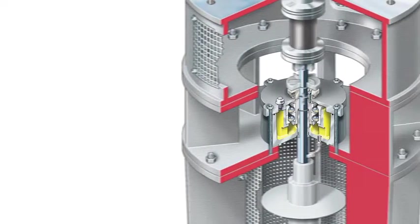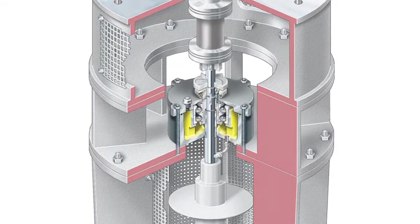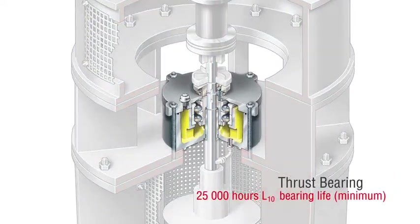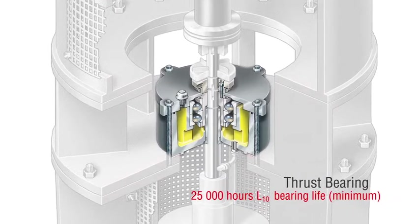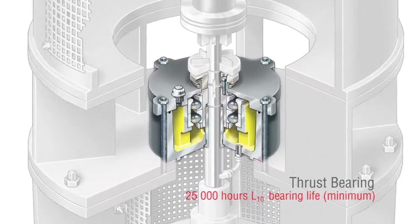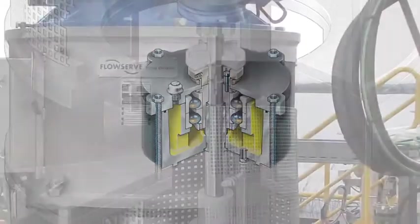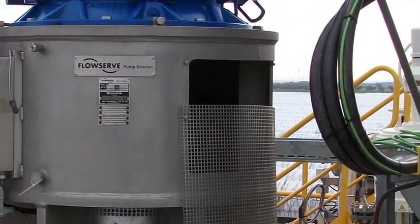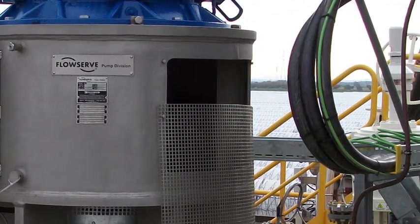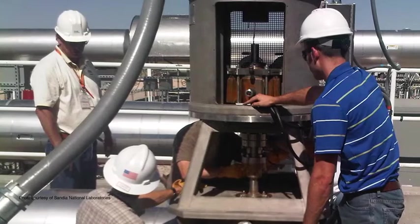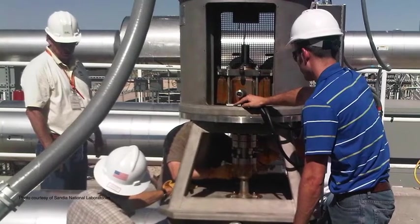The pump features a robust thrust bearing design to handle the pump's total hydraulic thrust and its assembled weight while delivering a minimum of 25,000 hours L10 bearing life. When maintenance is required, large access ports in the discharge head enable the thrust bearing to be removed without disturbing the motor. No cranes are required.